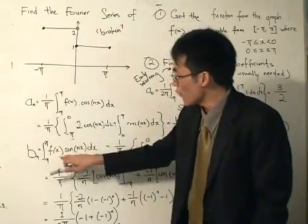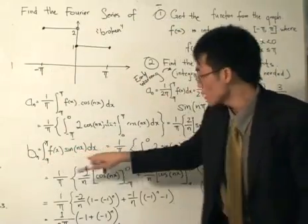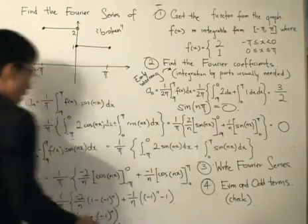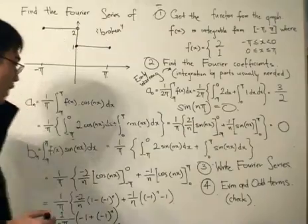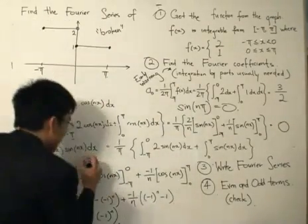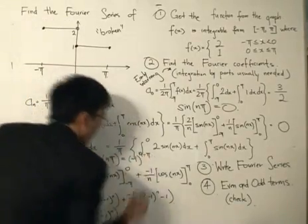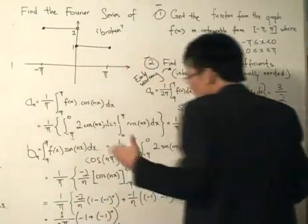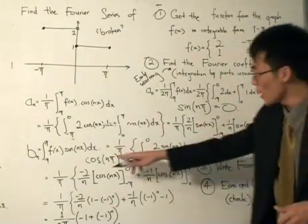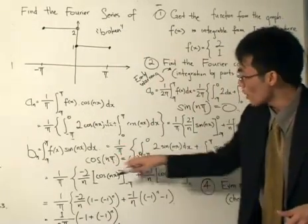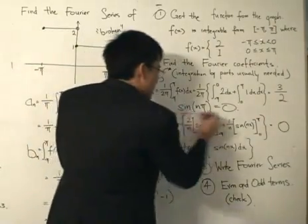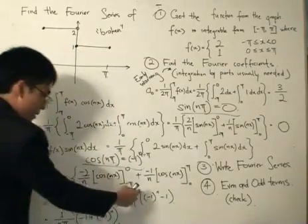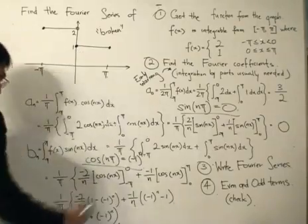Moving on to b_n: integrate from minus pi to pi of f(x) multiplied by sine(nx). Going through the same steps, integrating sine gives cosine. Substituting the limits and using the key trigonometric identity — cosine(nπ) equals (−1)ⁿ — we convert the expression. Just look at the cosine graph: at integer multiples of pi you get either one or minus one depending on n. Using this identity and bringing out the constants, b_n simplifies to a form common in Fourier analysis.